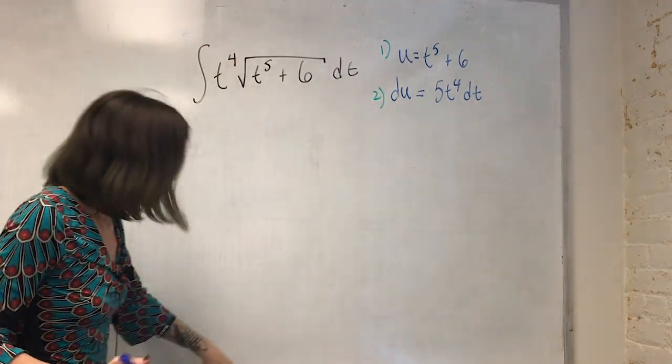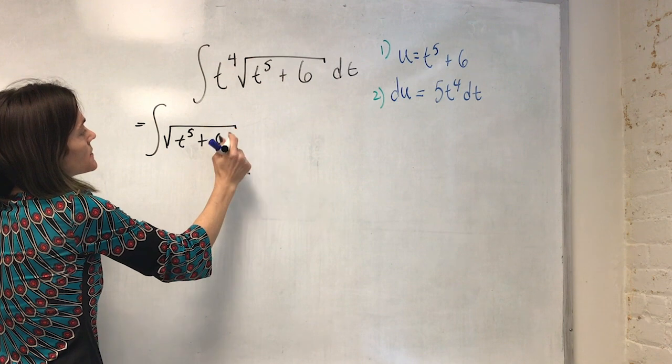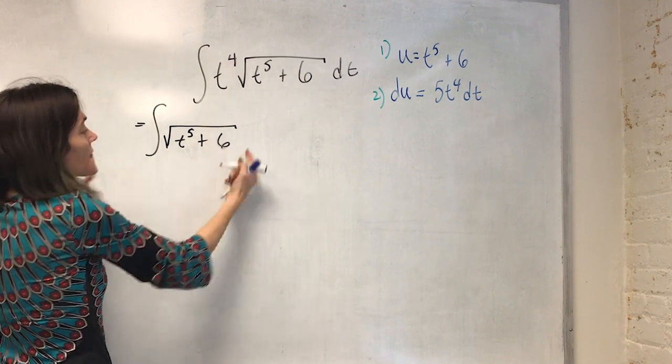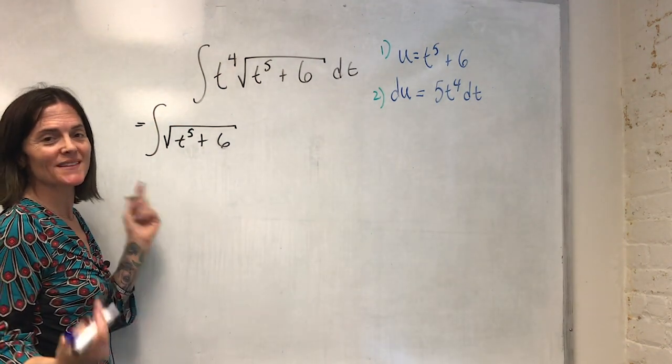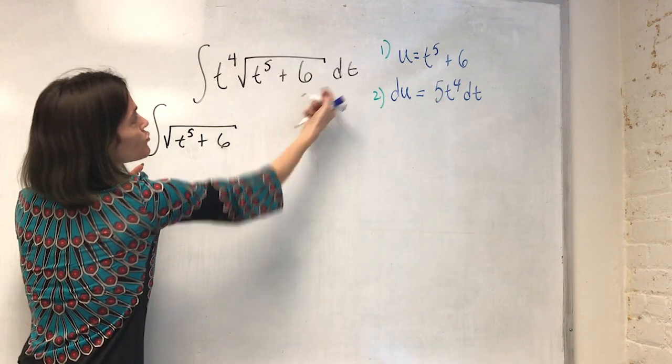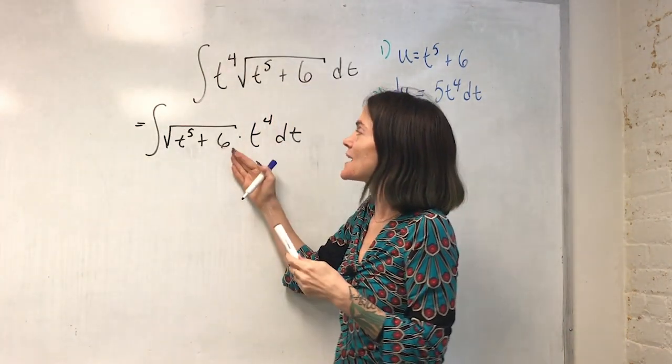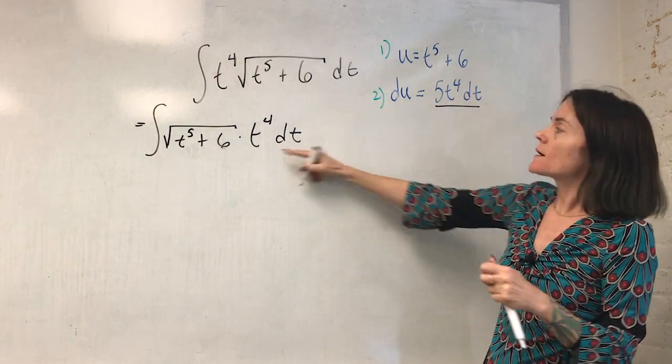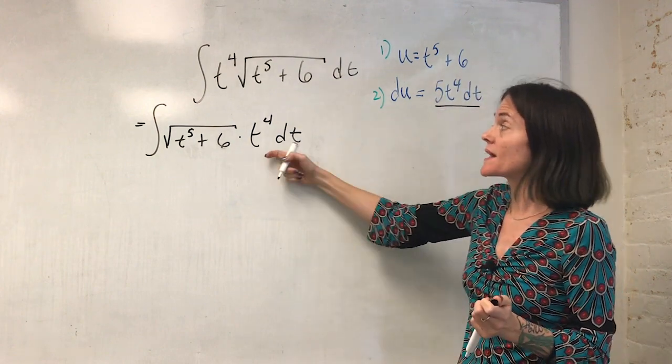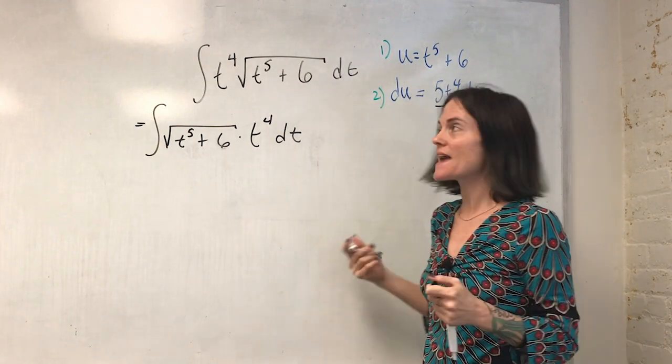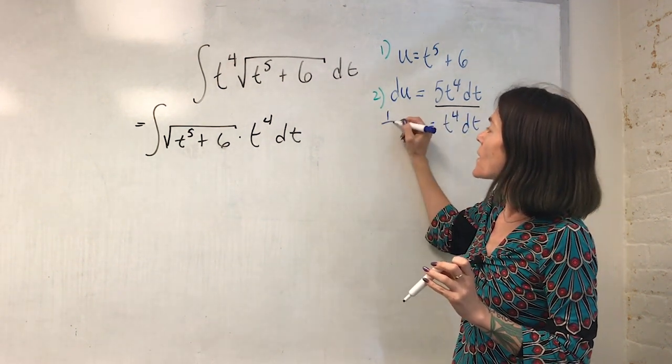Now, if we rewrite this, it might be a little more clear. I have all of this here, t to the fifth plus six. And this part, I am ready to convert to something of u. Remember what I said, every single piece of the integral must be something of u. This is step three. This part, which is not of u, I group it with the dt. Now, very good. These two are clearly equal. I just rearranged things. We look here, and it is not exactly. This is t to the fourth dt. This is 5t to the fourth dt. But if I need to solve for what is handed to me in my integral, so t to the fourth dt, well, I can just divide everything by five. This is one-fifth du.